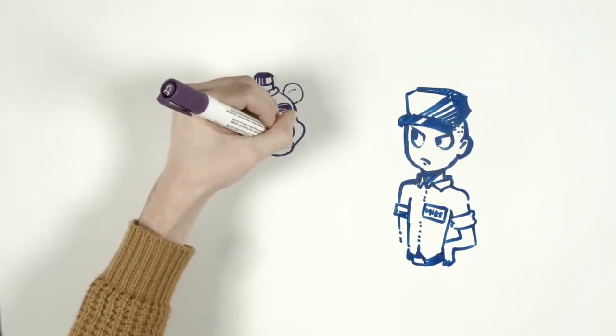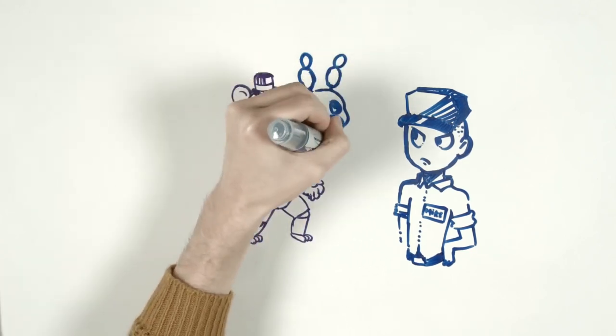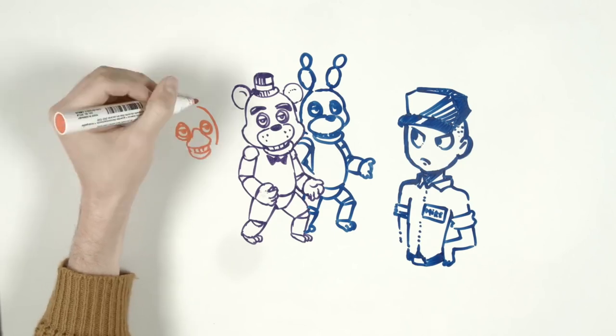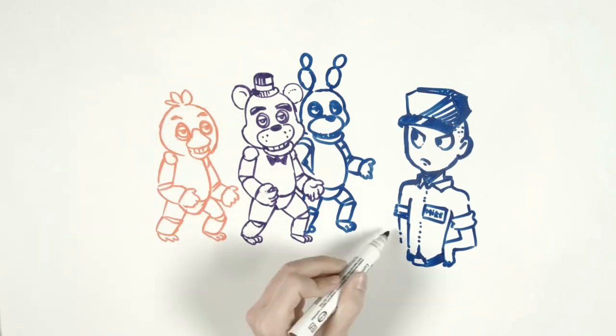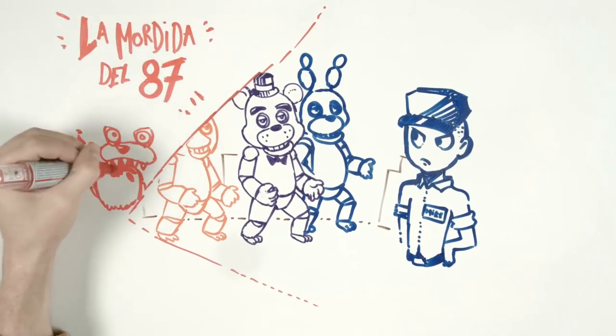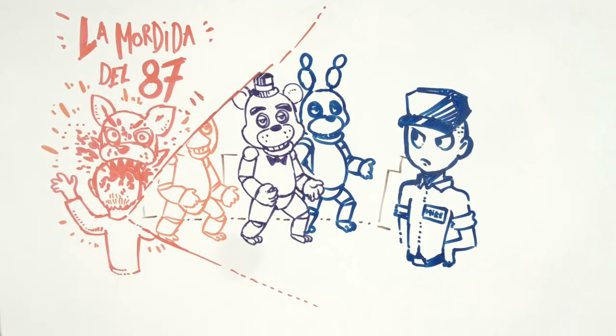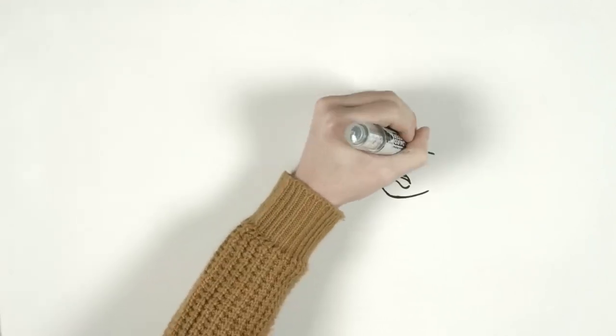Mike's predecessor leaves a voicemail for him in the first night of work. He explains that the restaurant's animatronic characters come to life at night because their servo motors would lock up if they were left off for too long. They remain immobile during the day since the incident called the Bite of 87, which involved an animatronic going haywire and biting off a person's frontal lobe.